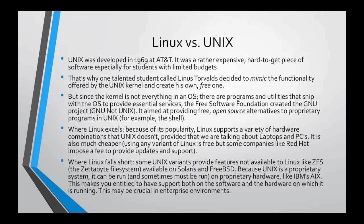However, Linux falls short in that some Unix variants provide features not available to Linux, like the ZFS file system — short for Zettabyte File System. A file system is just a way the operating system organizes your files and folders on the disk — it allocates disk space and lets you manipulate files by creating, editing, deleting them, and changing their permissions. The Zettabyte file system is one of the most powerful file systems available, much more powerful than ext3 or ext4 used by Linux, but it is proprietary, used by Oracle Solaris, and cannot be ported to Linux for copyright and license reasons.